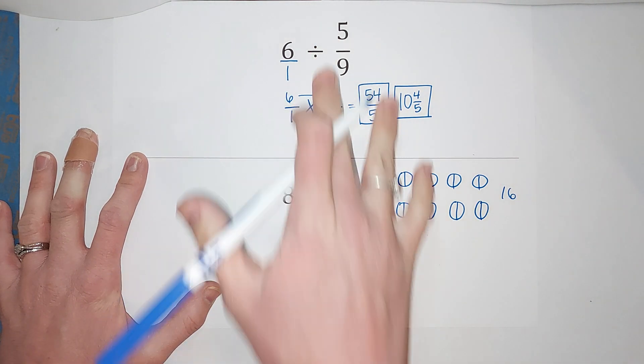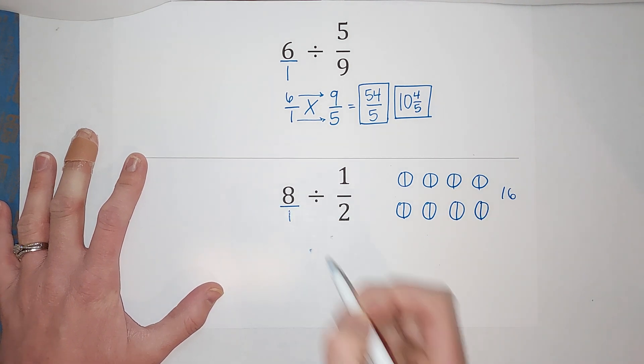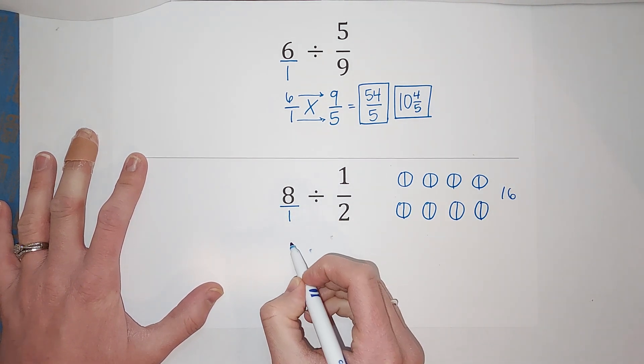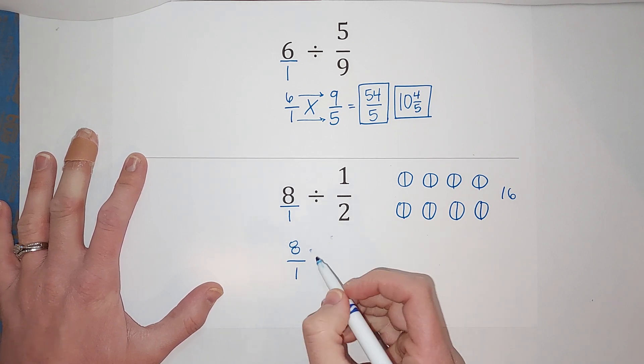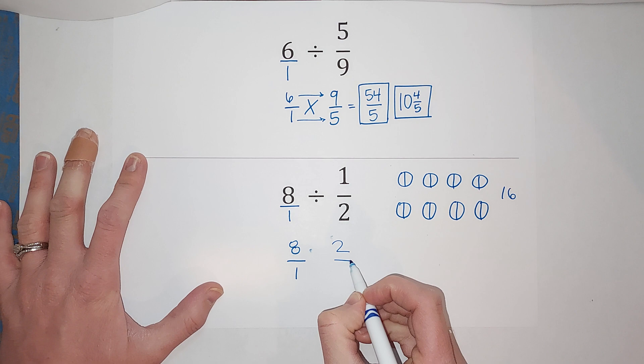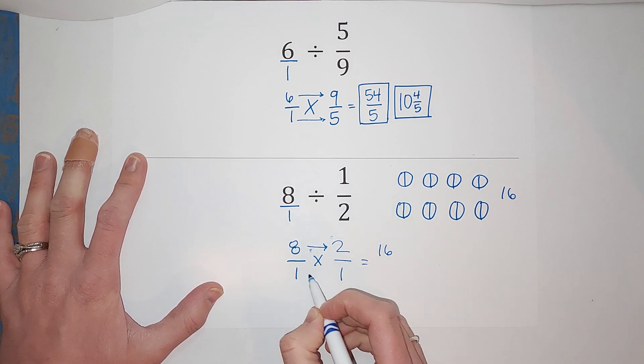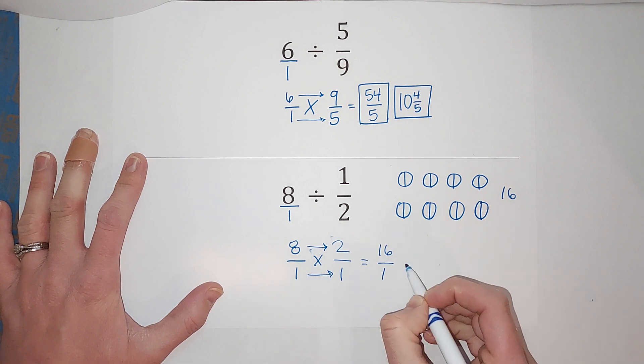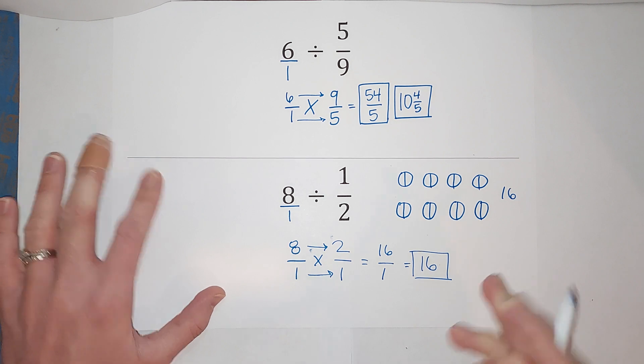Now let's do what we did up here and make sure we get 16. I can turn this into a fraction by putting it over one. Then we do 8/1—you could probably do this in your head, but I'm gonna draw it out for fun. We flip this one, times. Go across: eight times two is 16, one times one is one, which just simplifies down to 16.